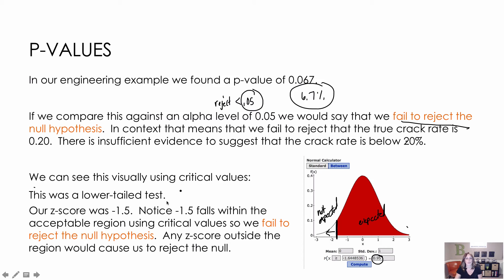Well, now, if I get my z-score was negative 1.5, that's right here. So that's in the expected region. If it were on the other side, then I would say, oh, I wasn't expecting that to happen. And therefore, I'm going to reject that it's actually 20%.